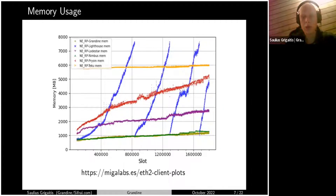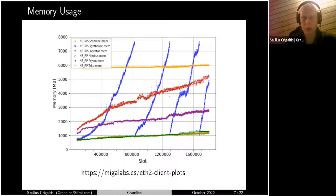For memory usage, this chart is from the Megalabs team, showing memory when Grandine was syncing on a Raspberry Pi device. The Raspberry Pi is a resource-constrained device, so it's very visible if a process doesn't use a lot of memory. You can see that memory usage is similar to Nimbus, which targets low-resource devices. Low memory usage is another feature that we have.